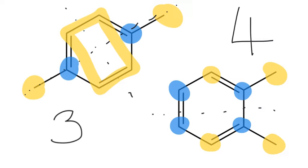Taking you through that one nice and slowly, hopefully that shows you how, if you consider symmetry at various different points of the whole molecule, you can end up with equivalent environments, and that correlates to the number of peaks we can expect to get. Let's have a look at a different example.